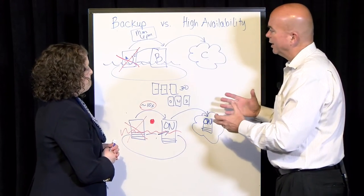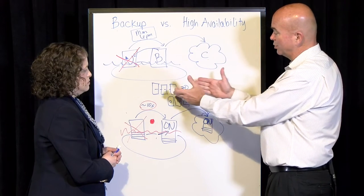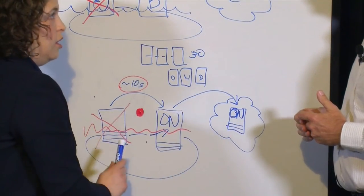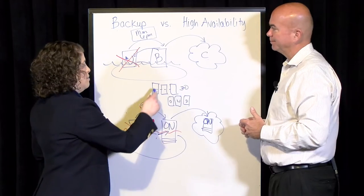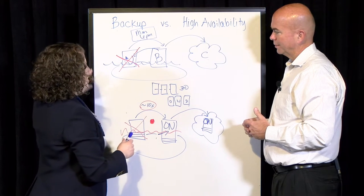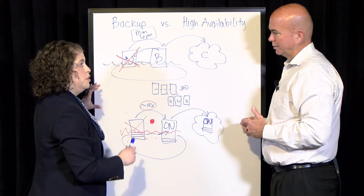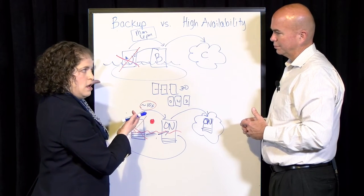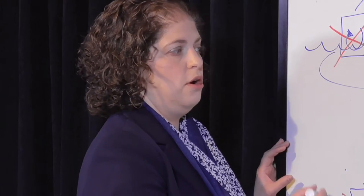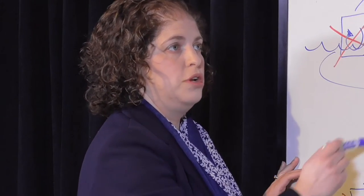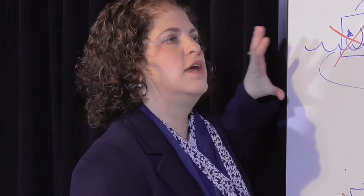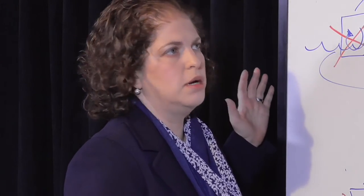Backup doesn't go away — we still use that for our historical copies. High availability is not the best technology for keeping historical copies; backup is far better. What we typically see people doing is bucketing their workloads into critical systems and less critical systems — a tiering approach. Critical systems are often protected with both an availability solution and a backup solution, while less critical systems might just be protected with backup, understanding that two days of downtime isn't going to break anyone.